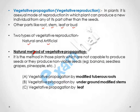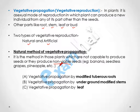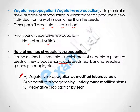In the natural method of vegetative reproduction, plants that are not capable of producing seeds, or which produce non-viable seeds — seeds that are not able to germinate — such as banana, seedless grapes, and pineapples, are reproduced this way. In this natural method, we will study three forms: vegetative propagation by modified tuberous root, vegetative propagation by underground modified stem, and vegetative propagation by leaf.